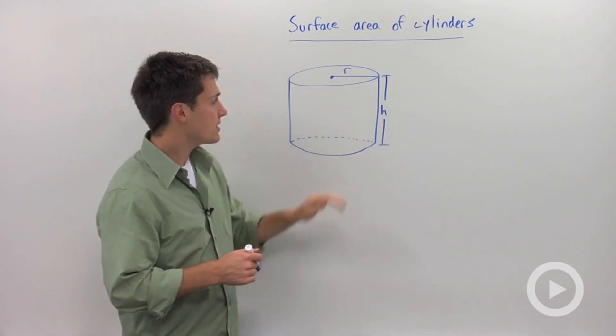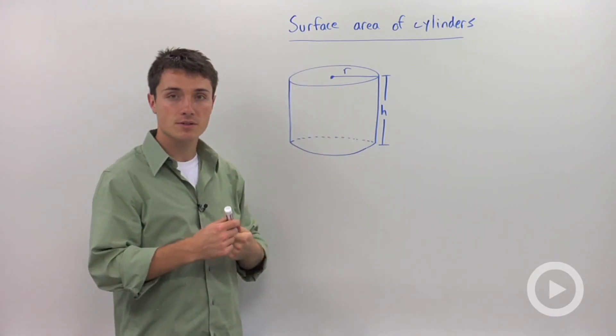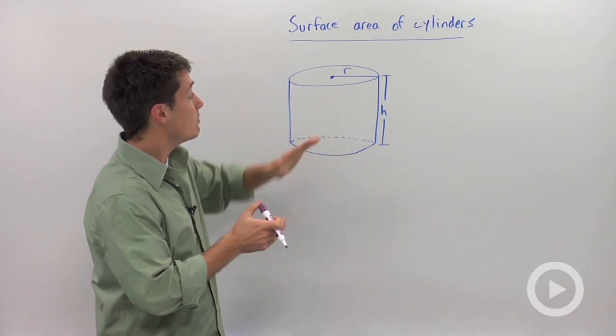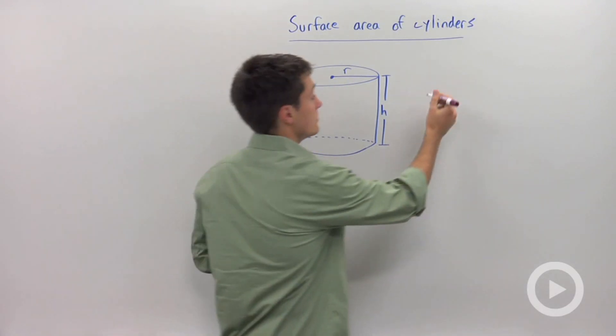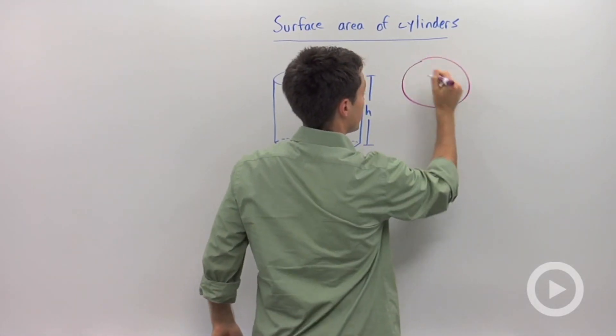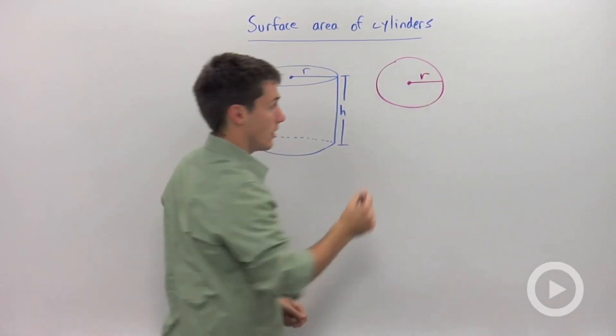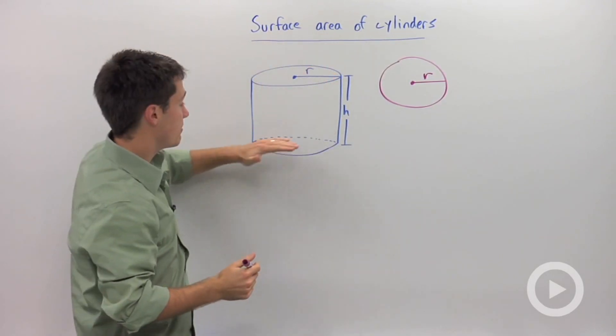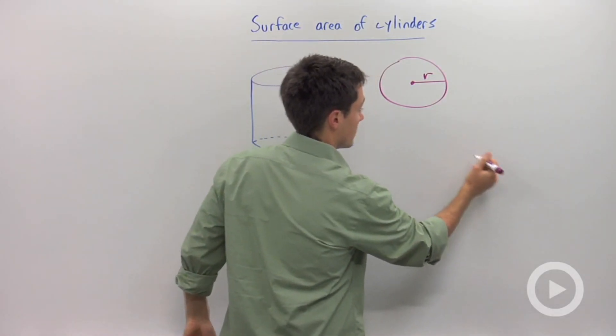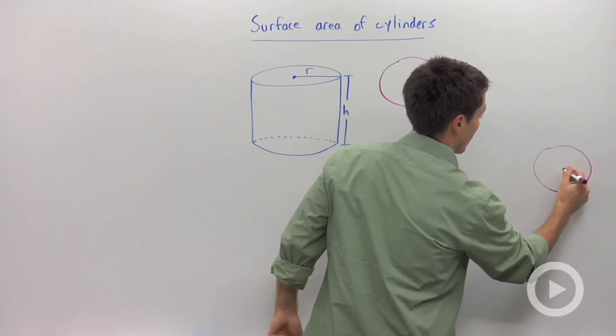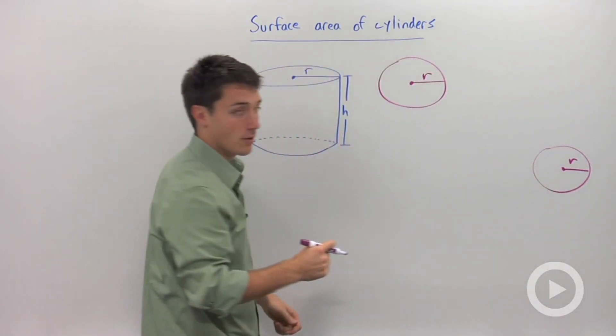Well to do that, let's separate the different pieces of the cylinder. We could take this top, which is a circle, and I'm going to draw that circle right there where we have some radius r. So we're going to have the top, and the bottom is also going to be a circle. So I can draw the bottom right there. So these two are going to be congruent.